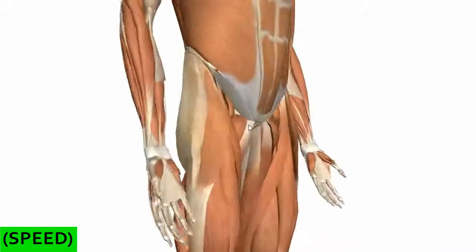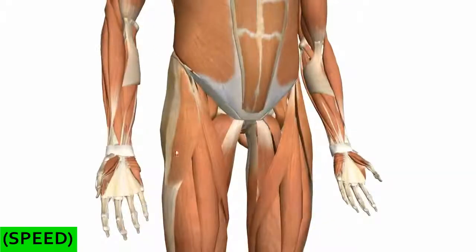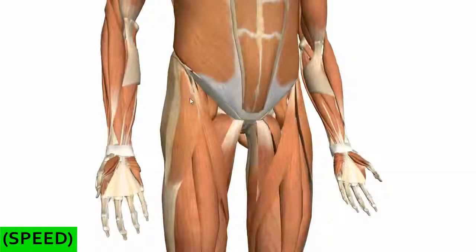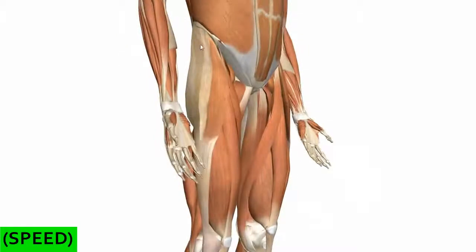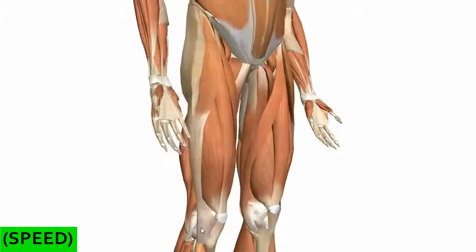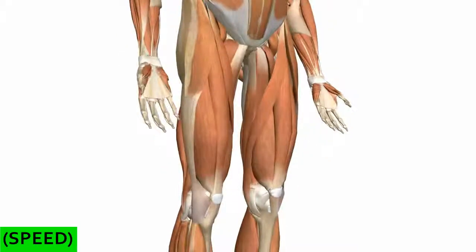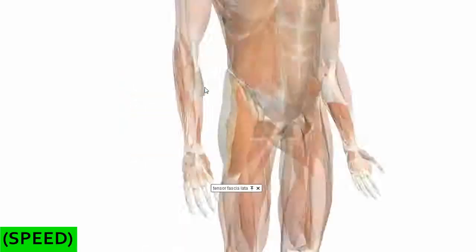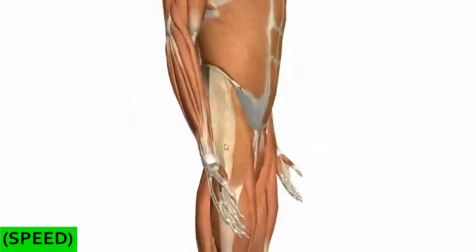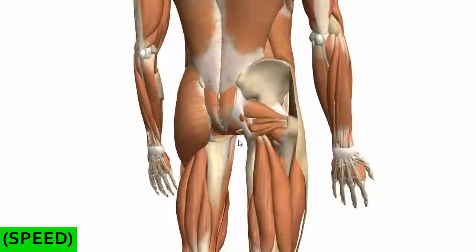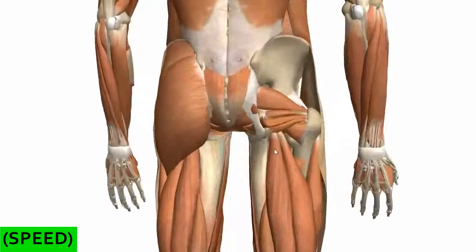Then you've got the tensor fasciae latae muscle. This muscle inserts onto the iliotibial tract — a band of fascia — and what this muscle does is it stabilizes the knee in extension. So those are the four muscles of the superficial group in the gluteal region.